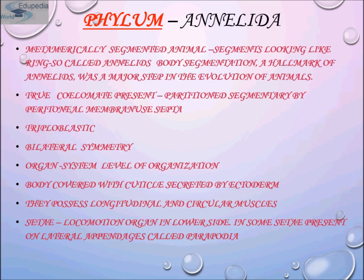The digestive system of annelids consists of an unsegmented gut that runs through the middle of the body, from the mouth located on the underside of the head to the anus on the pygidium — the terminal end of the phylum Annelida. The gut is separated from the body wall by the body cavity called the coelom.